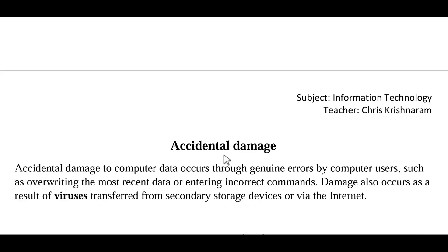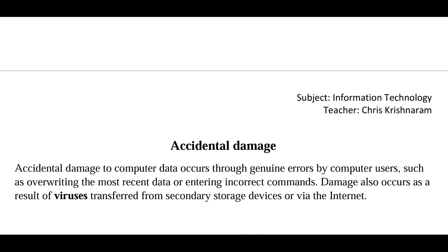Now that we know how a person can deliberately damage a system, let us see how damage occurs accidentally. A computer and its data can be accidentally damaged through genuine errors by users, such as overwriting recent data or entering incorrect commands. Damage can also occur from viruses transferred via secondary storage devices or the internet — for example, a user with an infected laptop at home infects a flash drive, then plugs that flash drive into their work computer, infecting it.